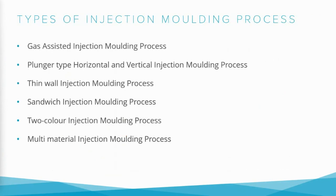These are some of the types of plastic injection molding process. We will generally look at gas-assisted and plunger-type injection molding, as these are the most used injection molding techniques among all.